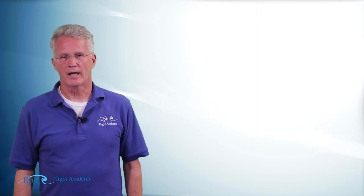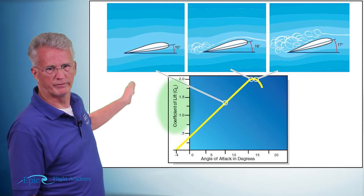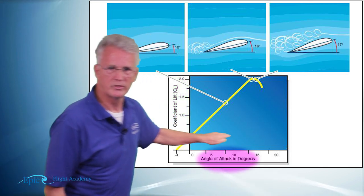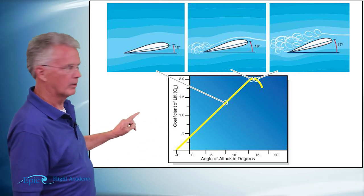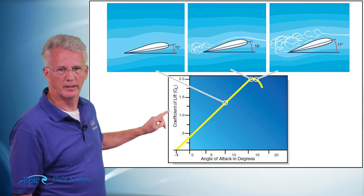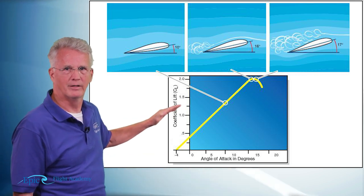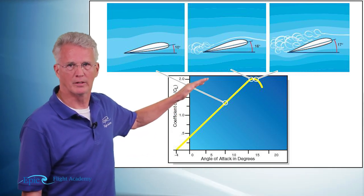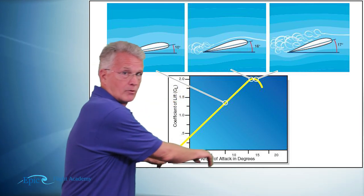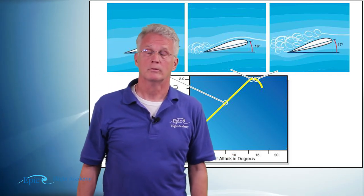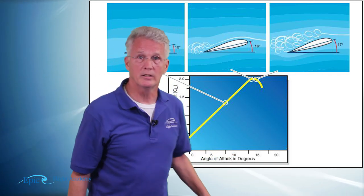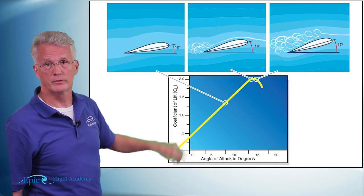Now the second diagram I want you to study for a little bit is called the angle of attack diagram. Notice vertically we see coefficient of lift and horizontally we see the angle of attack in degrees. The yellow line on the graph is depicting the quantity of lift that's increasing as the angle of attack across the bottom increases. It is true for these airfoils that as I increase the angle of attack, I will increase the coefficient of lift.